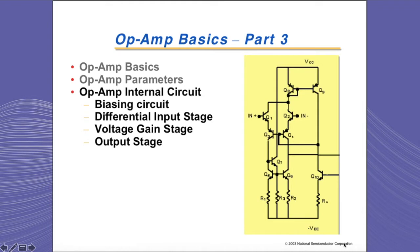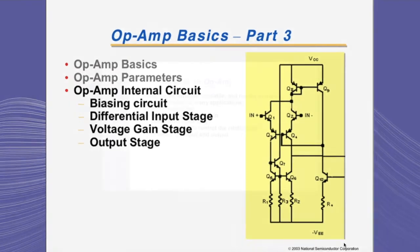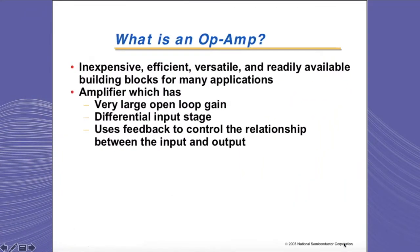After that, we will cover some of the op-amp parameters such as offsets, slew rate, CMRR, and CMVR. Finally, we will go over the internal circuitry of an op-amp, covering a very general and basic op-amp and the different stages of an op-amp. So what is an op-amp?